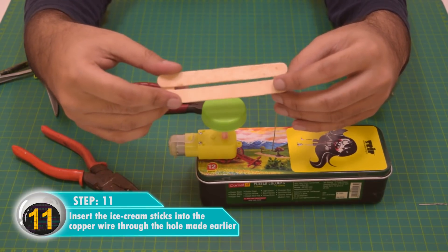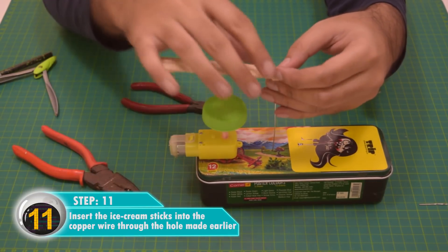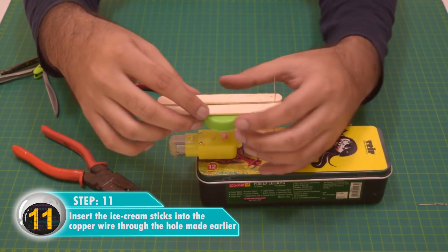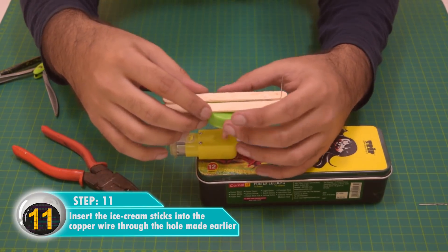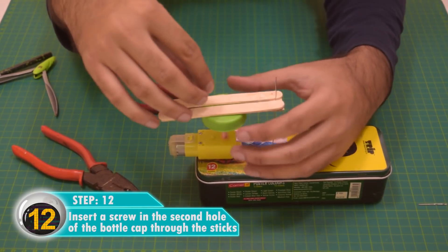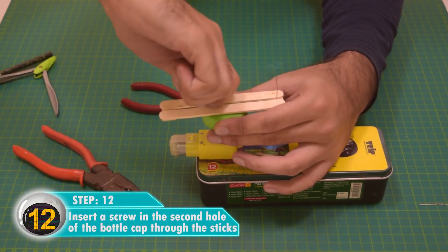Insert the first frame that we made using ice cream sticks on the wire that we just stuck to the box. Insert a screw in the second hole of the bottle cap through the sticks to secure it to the cap.